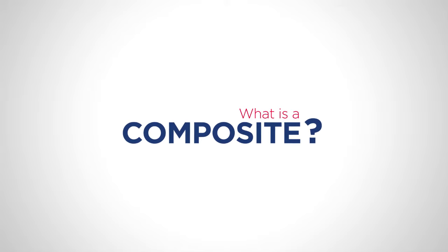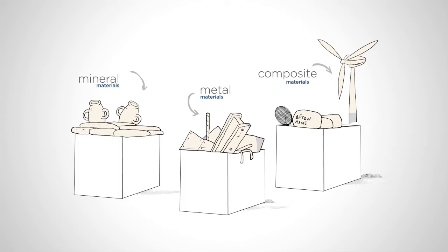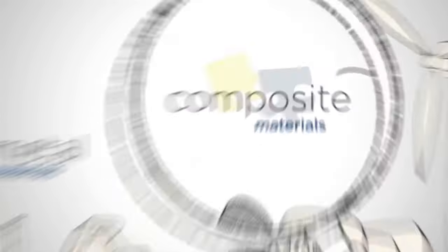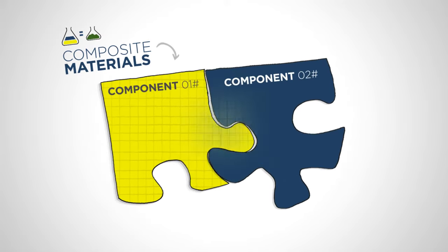What is a composite? To understand what this material is composed of, let's take a closer look at its structure. It has at least two different components whose properties complement each other.